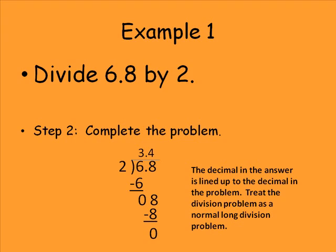The next step is to complete the problem. As you can see at the bottom I've begun to do that. The big key for me is to just ignore that decimal until the end. I would just treat this just like 68 divided by 2. That would leave me with 34.